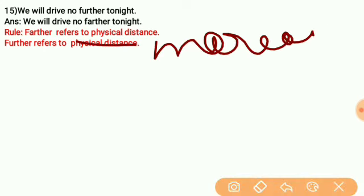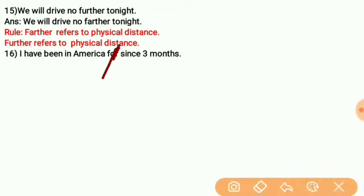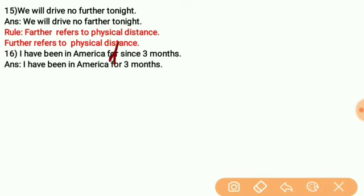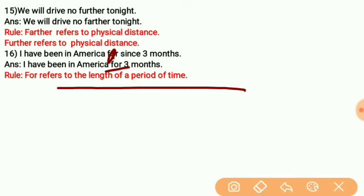Number 16: 'I have been in America since 3 months.' The correct answer is 'I have been in America for 3 months.' 'For' refers to the length of a period of time, while 'since' refers to a specific point in time. So use 'for' with a duration like '3 months,' not 'since.'